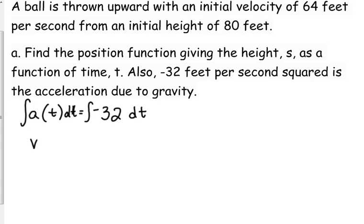The antiderivative of acceleration is velocity. The antiderivative of acceleration is velocity because acceleration is the derivative of velocity. The antiderivative of negative 32 with respect to T would be negative 32T plus C. Here's where you can't leave it off. You've got to include it.